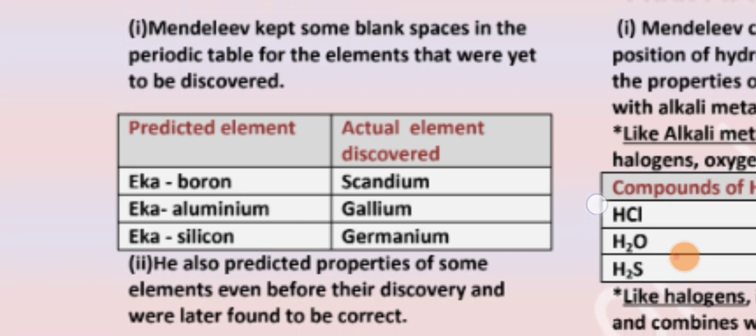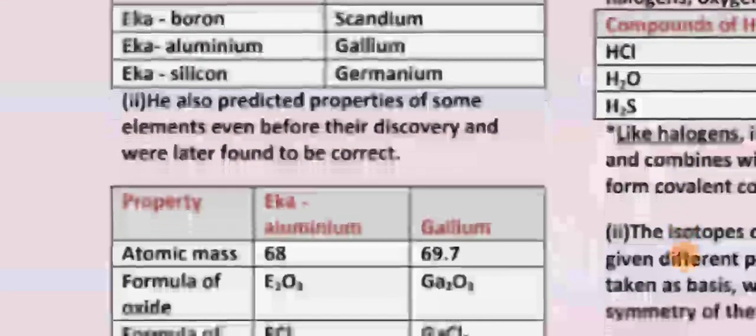Mendeleev also predicted the properties of some elements even before their discovery, and they were later found to be correct.